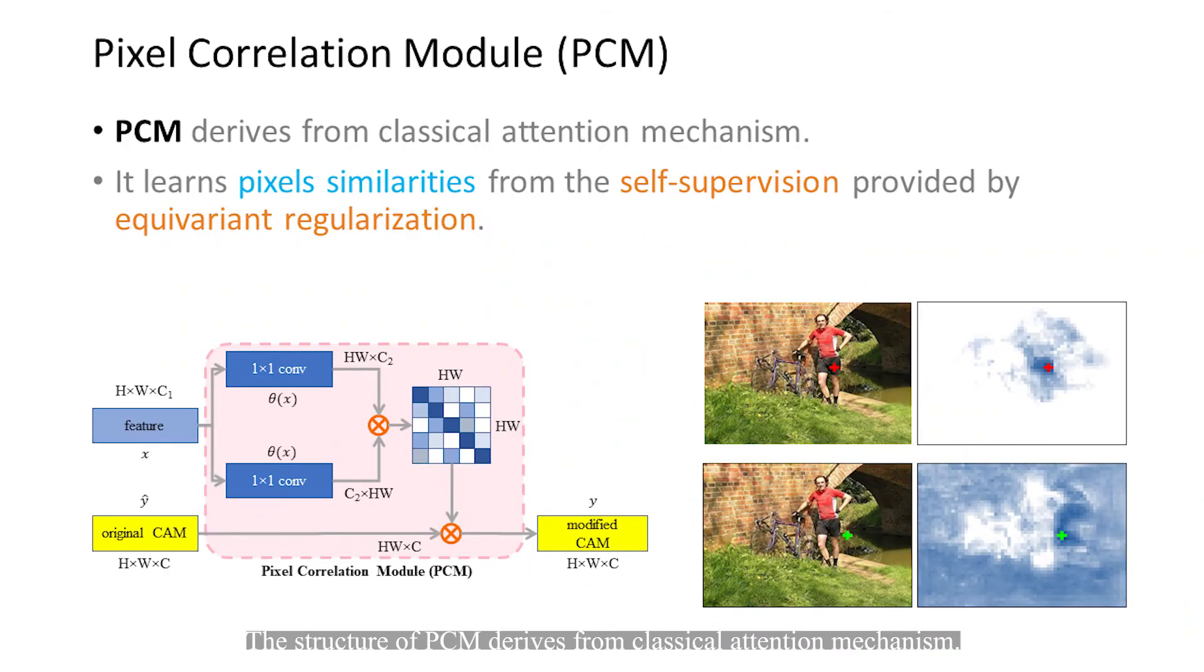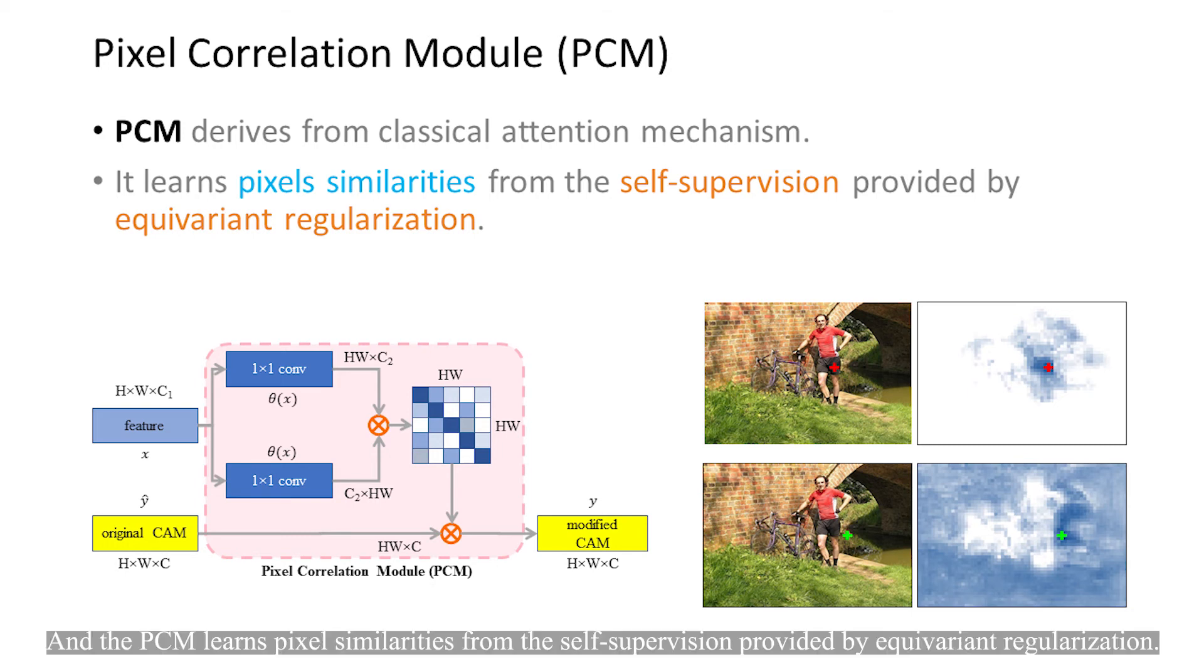The structure of PCM derives from classical attention mechanism. The input feature of PCM comes from multi-layers of the backbone network, and PCM learns pixel similarities from the self-supervision provided by equivariant regularization.